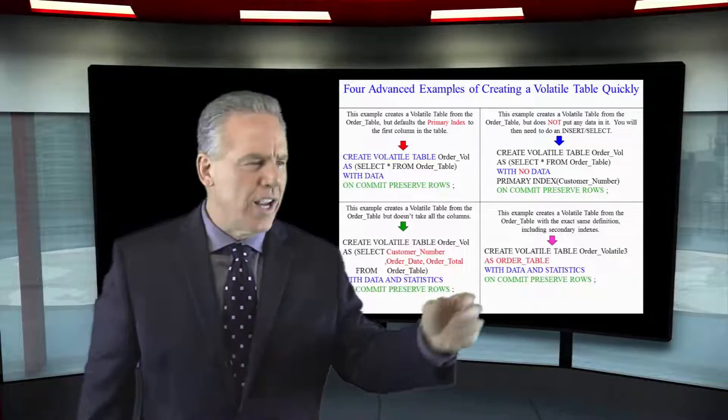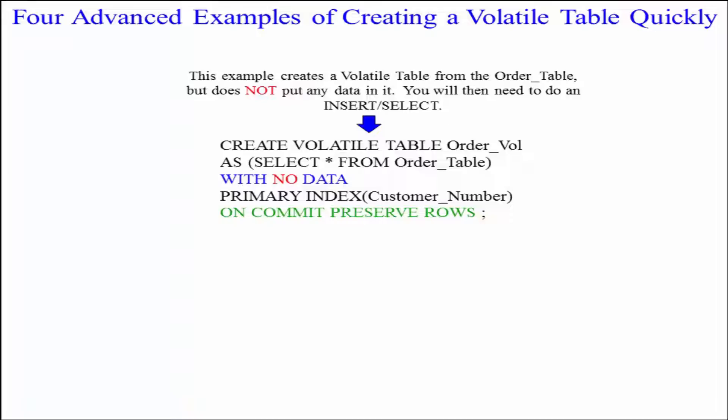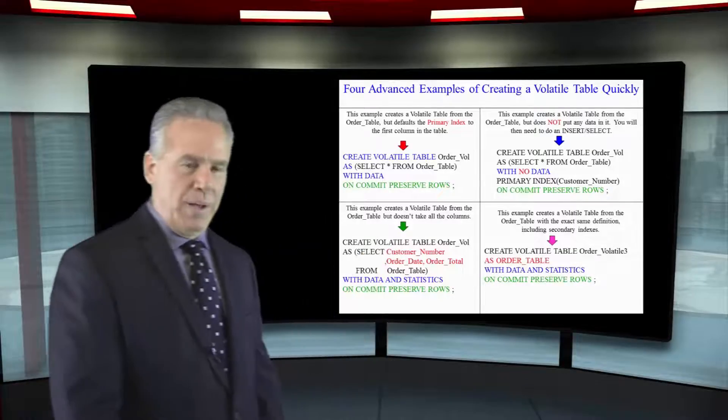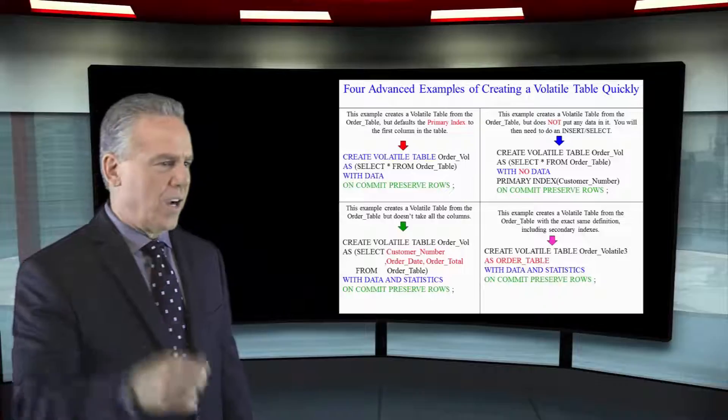The second example is going to say: create the volatile table order_vol as select everything from the order table with no data. You've got to say with data or with no data — there's no default. This is how you bring the basic table structure over with no data. Notice I gave it a primary index, otherwise it would default to the first column of the table. On commit preserve rows keeps it around the entire session.